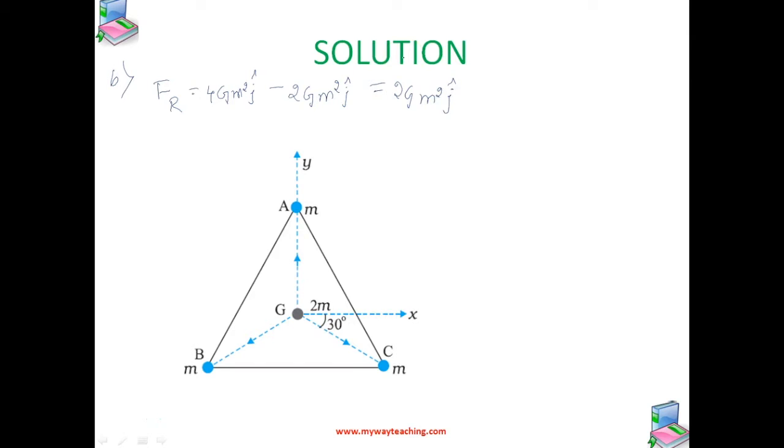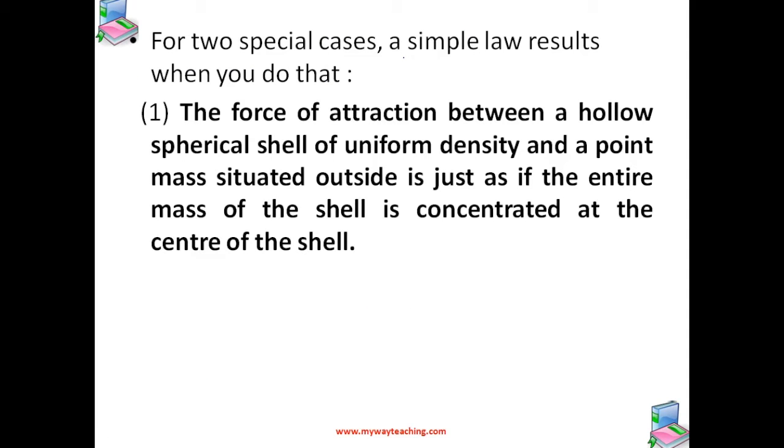For the gravitational force between an extended object like the earth and a point mass, the equation F is equal to G M1 M2 by R square is not directly applicable, because each point mass in the extended object will exert a force on the given point mass and these forces will not all be in the same direction. We have to add up these forces vectorially for all the point masses in the extended object to get the total force. That is done using calculus. For two special cases, a simple law results.